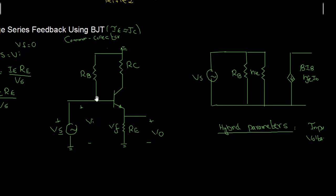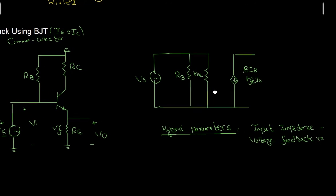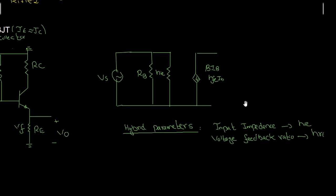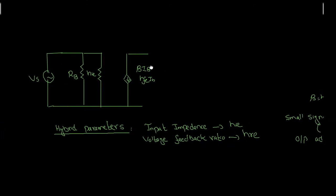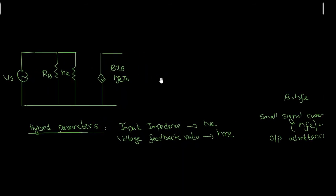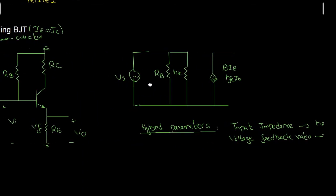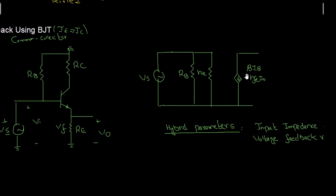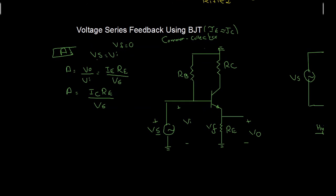Drawing the AC equivalent circuit using hybrid parameters: with the supply grounded we also have RB. This is the hybrid equivalent circuit. The input resistance of the transistor is HIE. At the output side, IC = beta times IB, so IC = HFE times IB. This is my AC equivalent circuit.